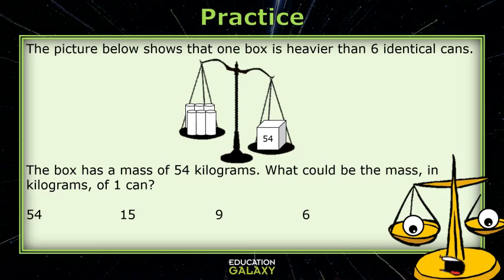Well, if they were balanced and they had the same mass, we would calculate 54 divided by 6, which is 9. So six cans that were 9 kilograms each would equal 54 kilogram box.